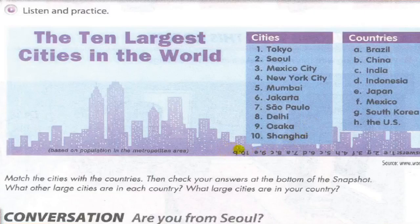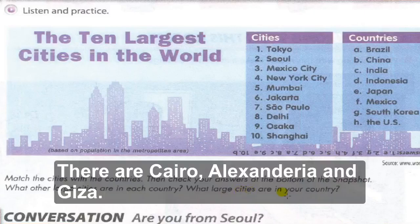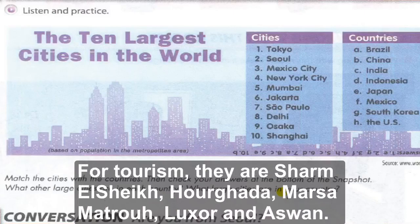What other large cities are in each country, and what large cities are in your country? In Japan: Tokyo, Osaka. In India: Mumbai, New Delhi. In the USA: New York, Washington DC, Florida, California. In Egypt: Cairo, Alexandria, Giza, Sharm el-Sheikh, Hurghada, Marsa Matruh, Luxor, and Aswan.